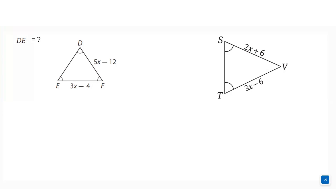Hello everyone. Today we will understand how to find out the side length of isosceles triangles or equilateral triangles if the side lengths are given with variables. If you like the video, at the end of the video, please do not forget to subscribe, share with your friends, and write a comment in the comment section.